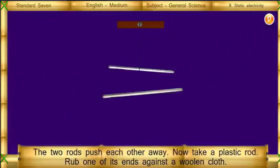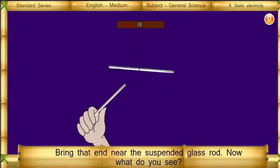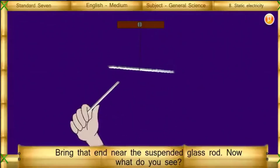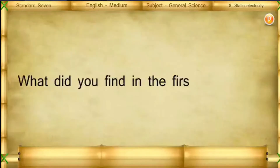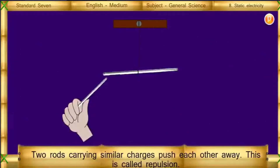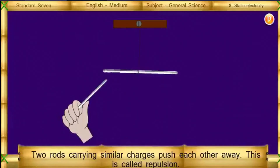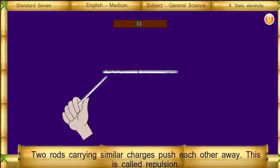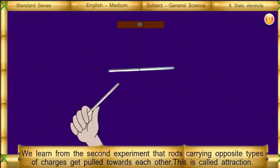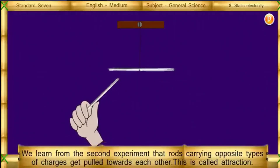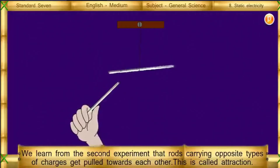Now take a plastic rod. Rub one of its ends against a woolen cloth. Bring that end near the suspended glass rod. The two rods are pulled toward each other. In the first experiment, two rods carrying similar charges push each other away — this is called repulsion. In the second experiment, rods carrying opposite types of charges get pulled toward each other — this is called attraction.